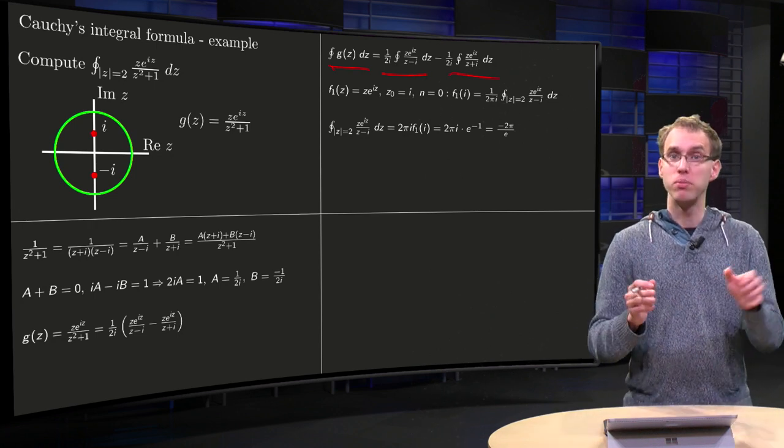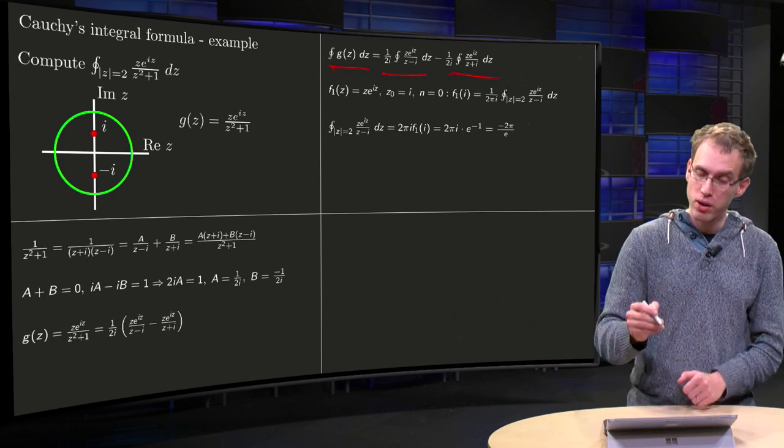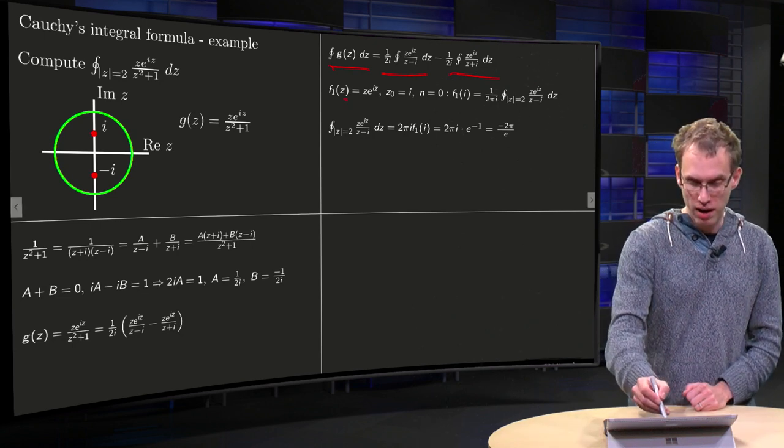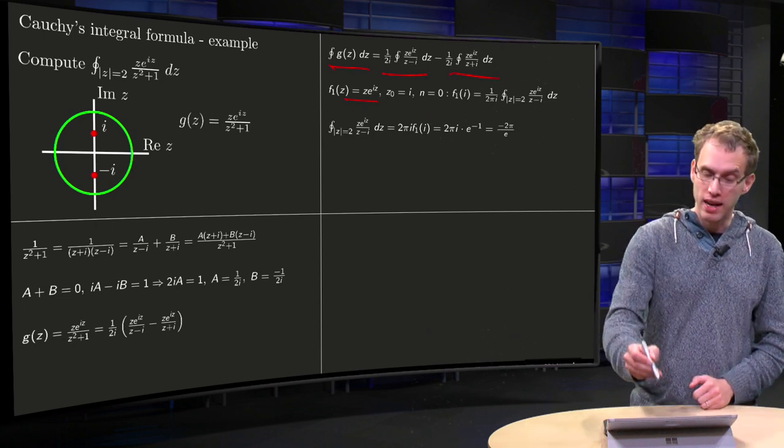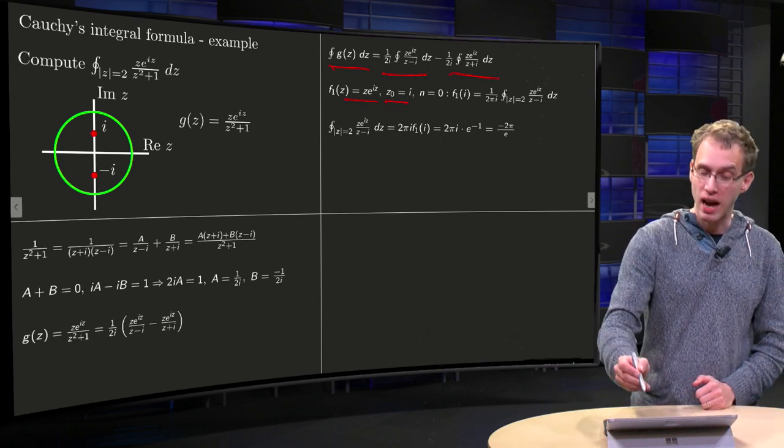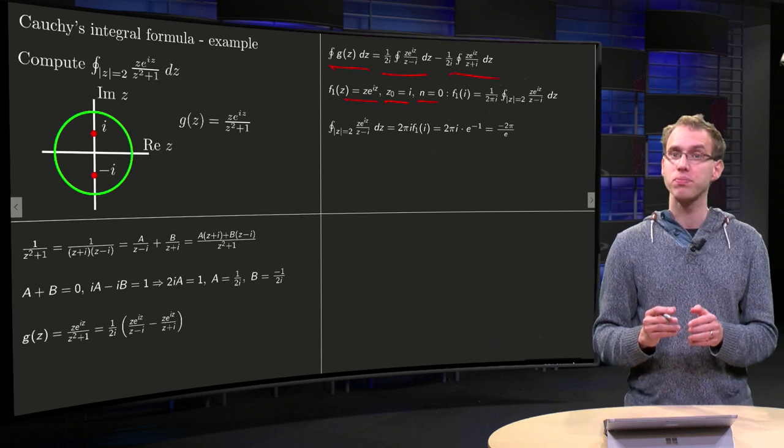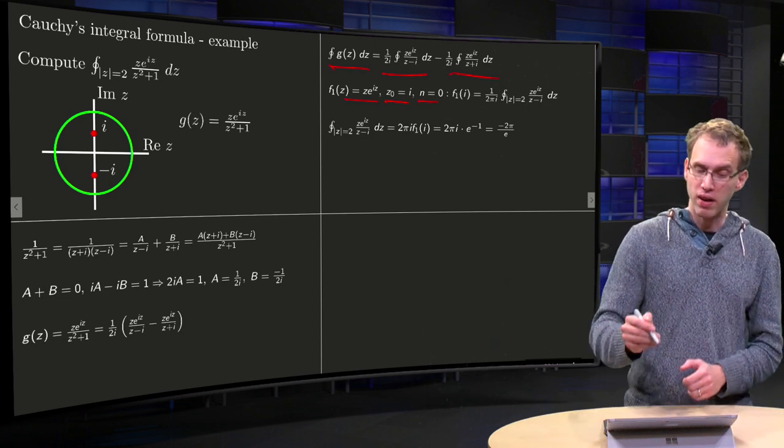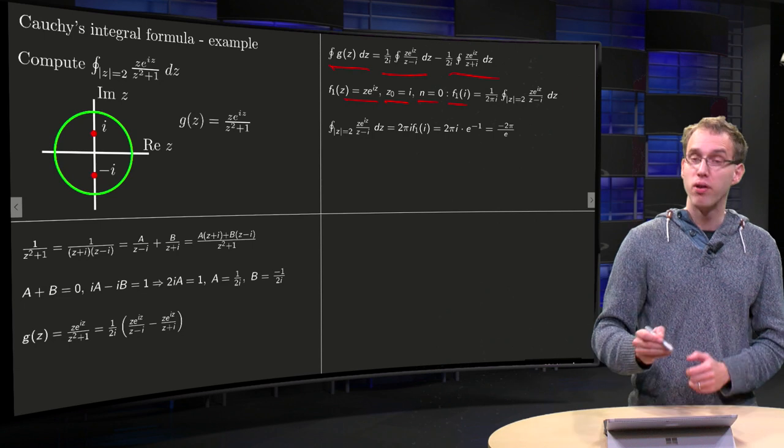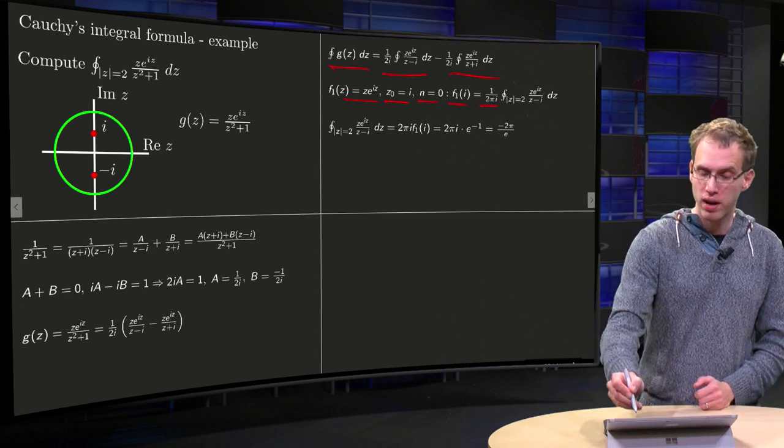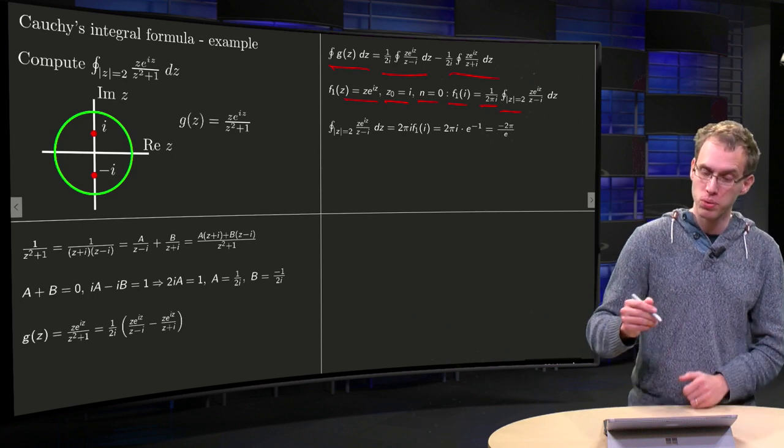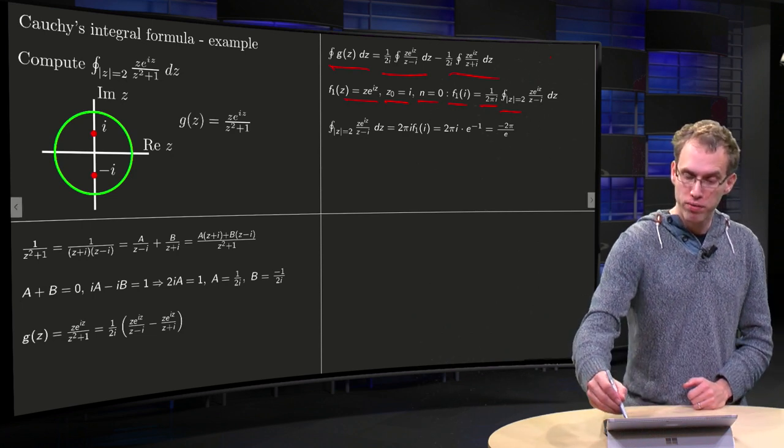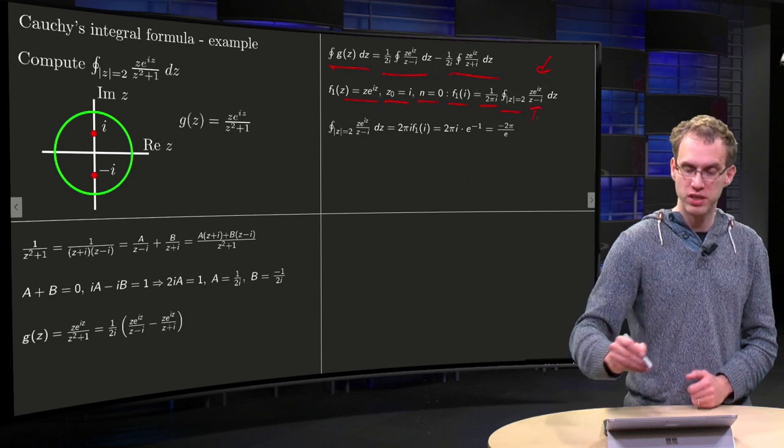And now we can do both of them using Cauchy integral formula. For the first integral, we choose f(z) as z·e^(iz), our z₀ we choose i, and n equals zero. Then we find f₁(i), if you use Cauchy integral formula, equals 2^i integral along |z| equals 2 of f(z) divided by z - i.